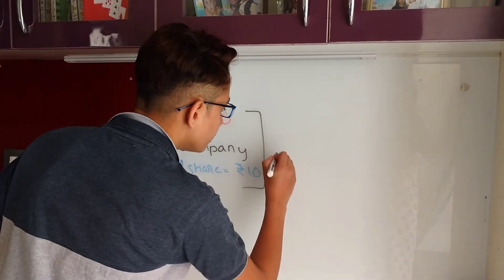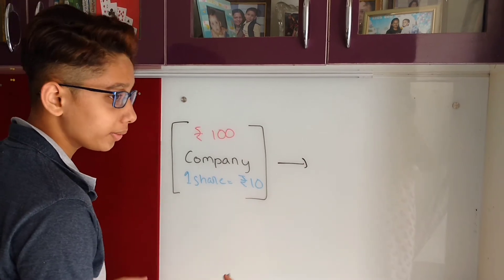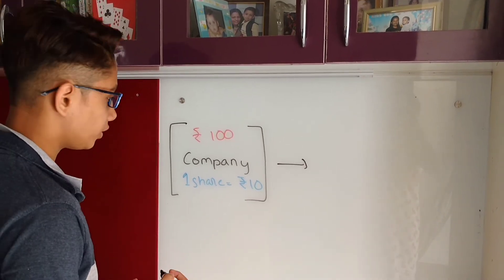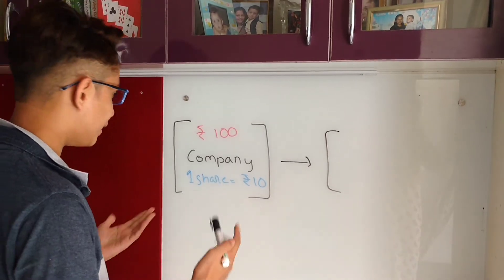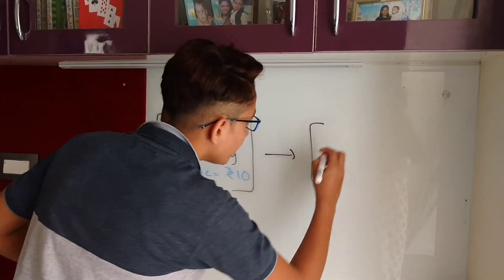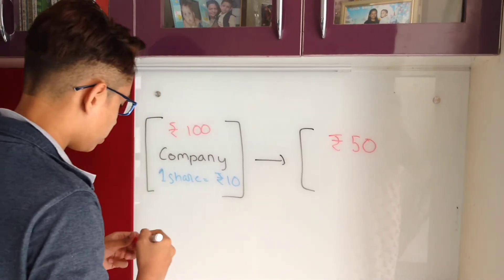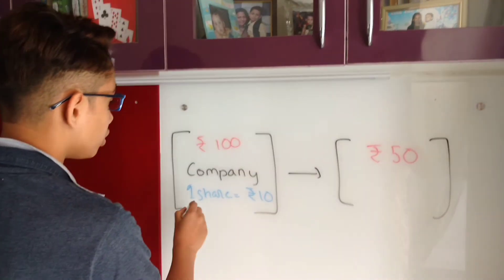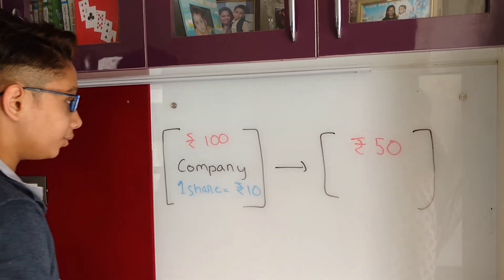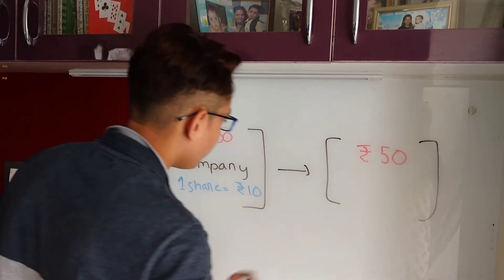Now the second case scenario is when the company doesn't use its money right and it will deteriorate, which means it will lose some of its money. So let's say your company is not doing that well and its worth has reduced to 50 rupees. Now since the company's worth has also reduced, that means the share will also reduce. As you can see it has reduced by half, so the share amount will also reduce by half.